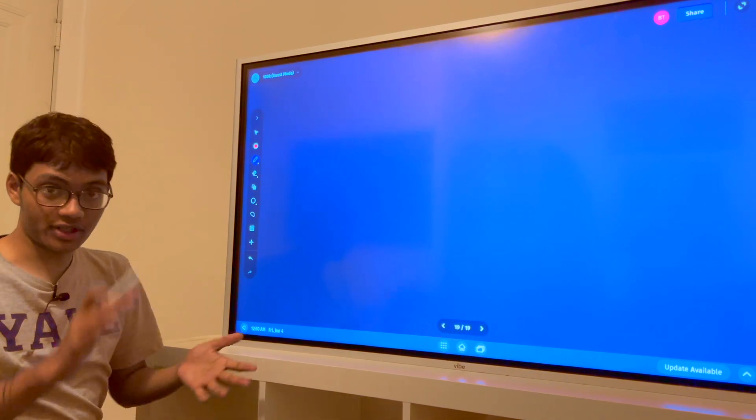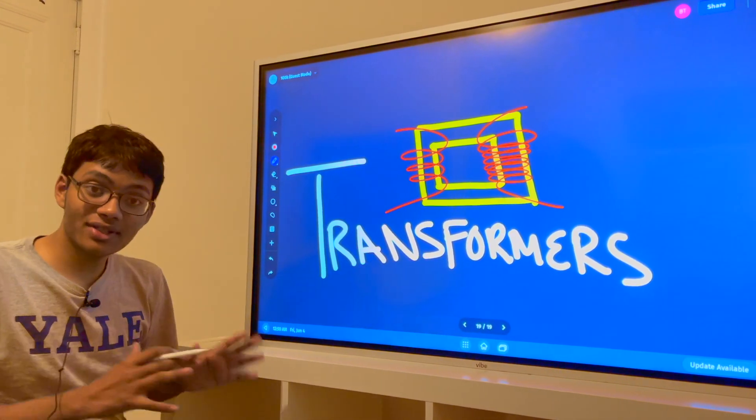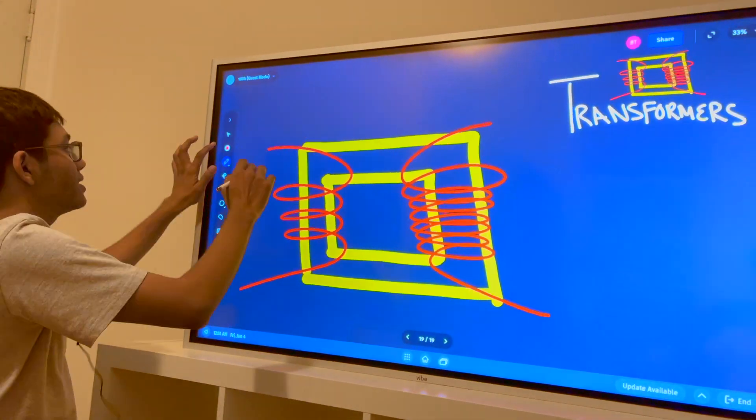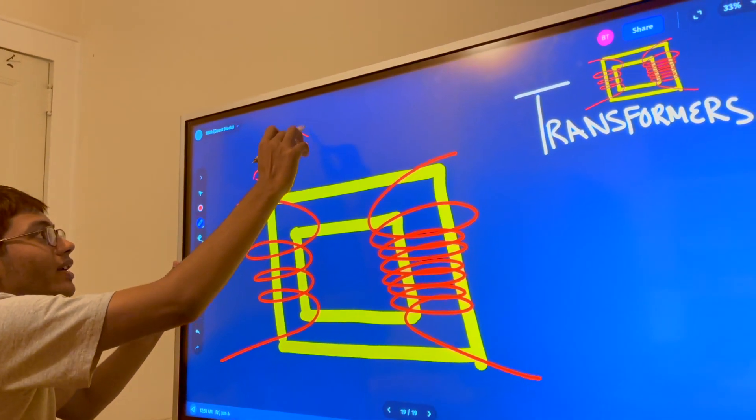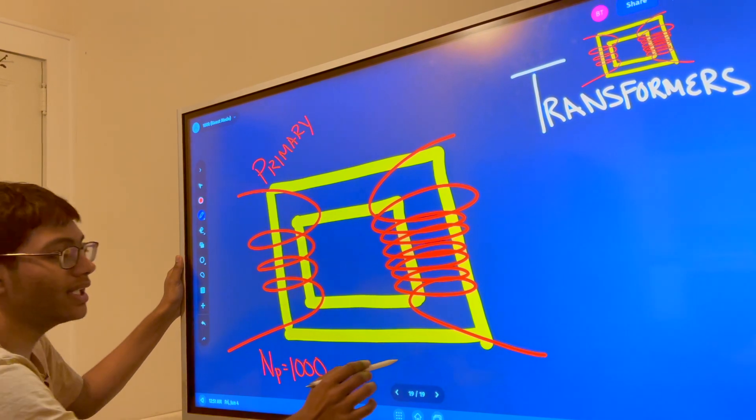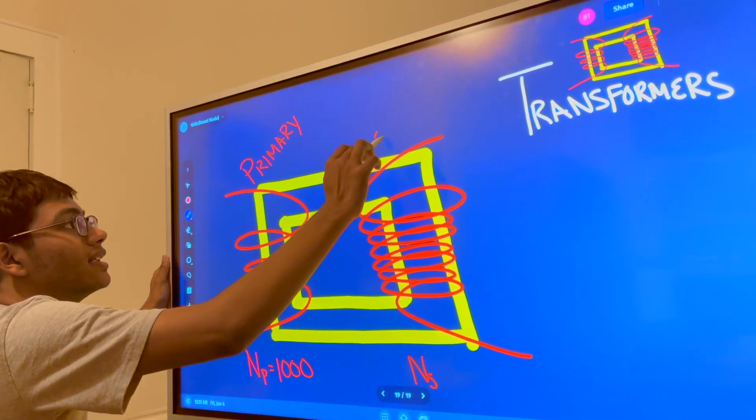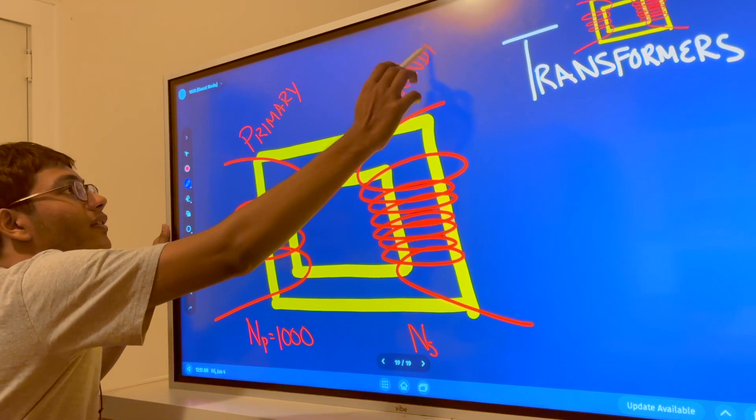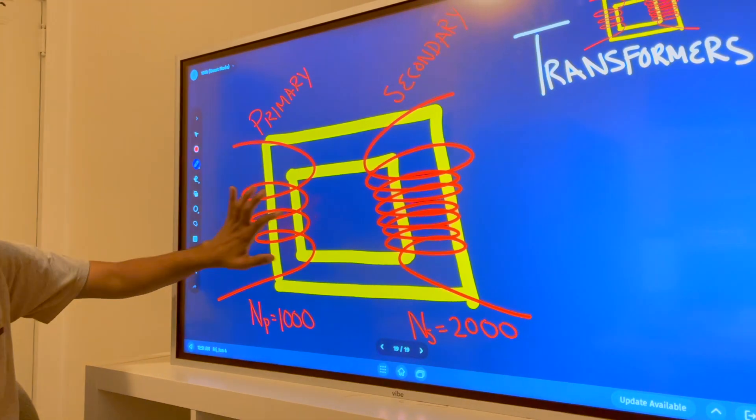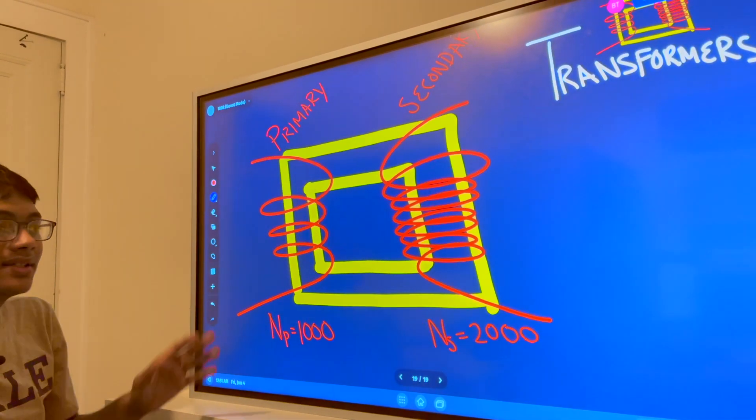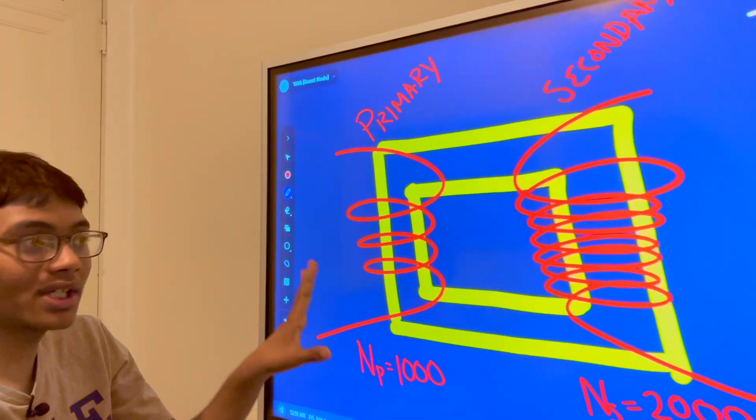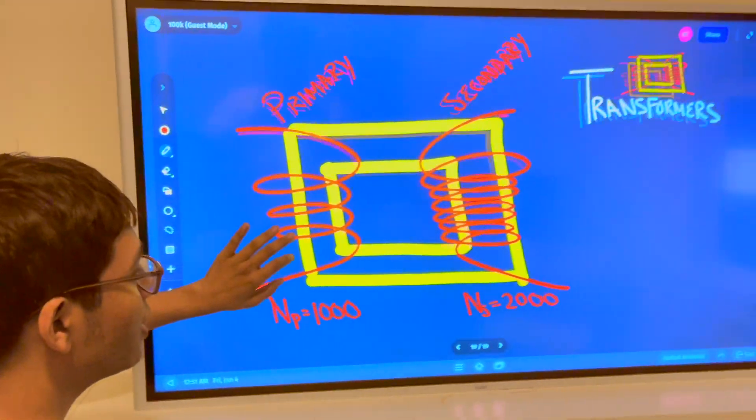So you just saw transformers - that's what they look like. Transformers can either step up or step down voltage so electricity can arrive to your house safely. On our left hand side, the primary side, we have maybe N=100 or 1,000 turns of wire. On our right hand side, the secondary side of our transformer, you can have maybe 2,000 turns of coils of wire. Since we have more coils on the right hand side, this transformer is going to step up the voltage. By how much? We're going to find out.